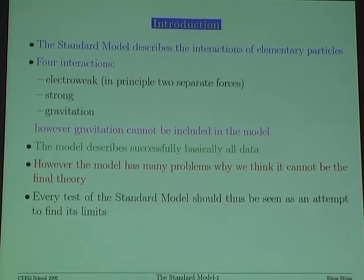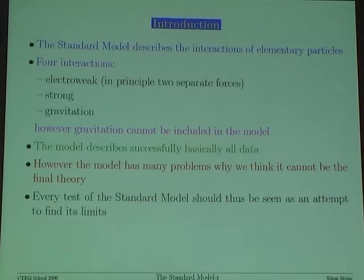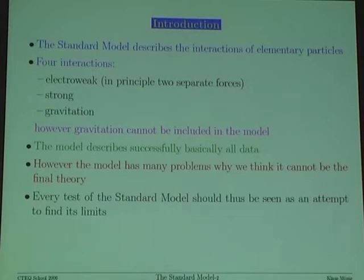What is the standard model? The standard model describes the interactions of elementary particles. We have in nature four interactions: electroweak, which is in principle two separate interactions that mix; strong interactions; and gravitation. Gravitation in daily life seems to be the most important, however it cannot be included in the standard model at all. Apart from that, the model describes successfully basically all data. However, the model has many problems, so we think it cannot be the final theory.